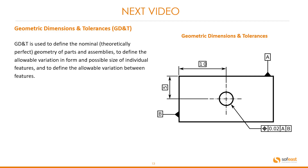In the next video we're going to be looking at geometric dimensions and tolerances, commonly known as GD&T. GD&T is used to define the nominal theoretically perfect geometry of parts and assemblies, to define the allowable variation in form and possible size of individual features, and to determine the allowable variation between features.